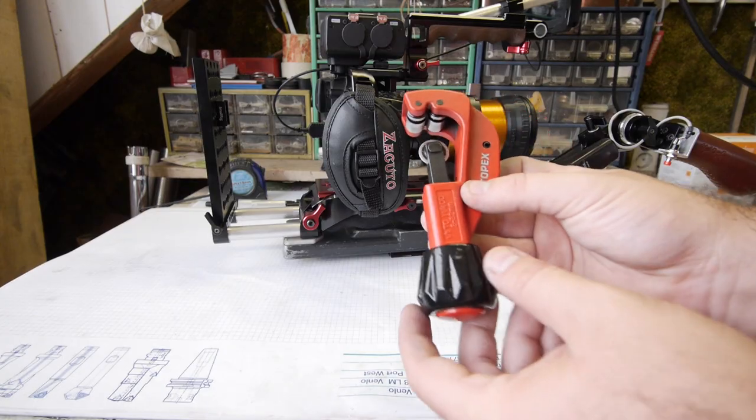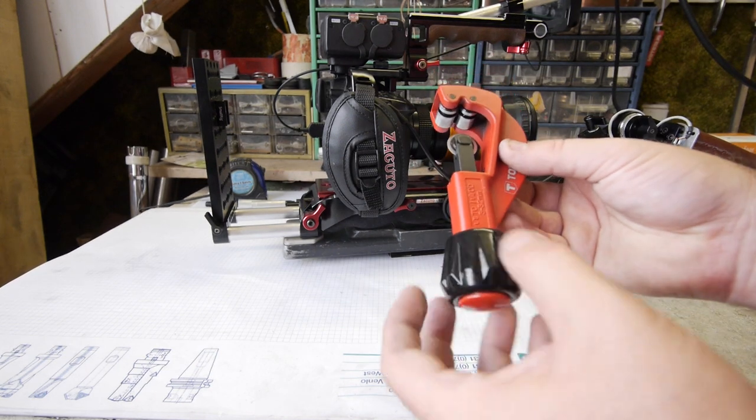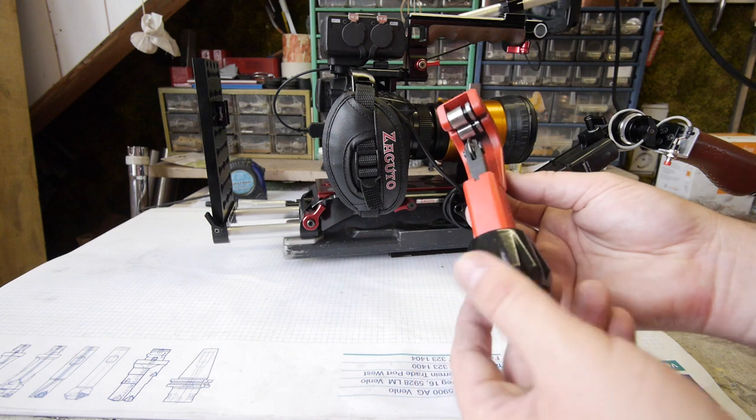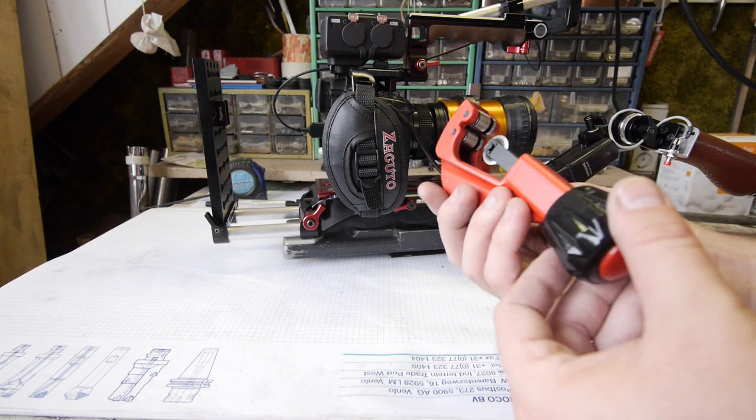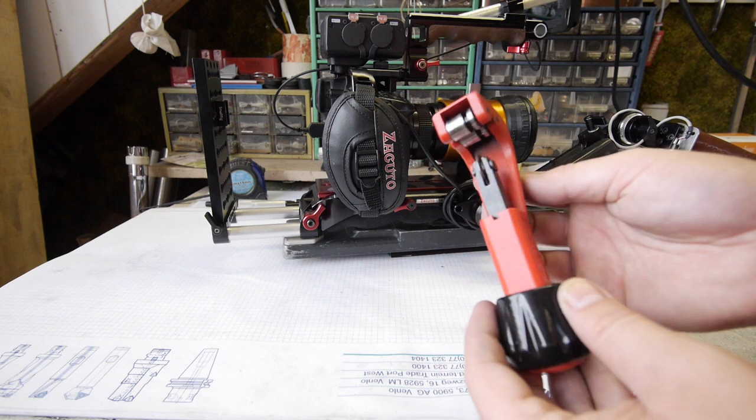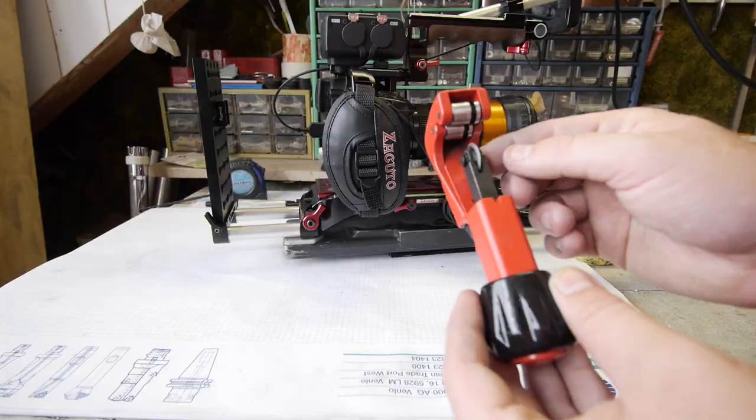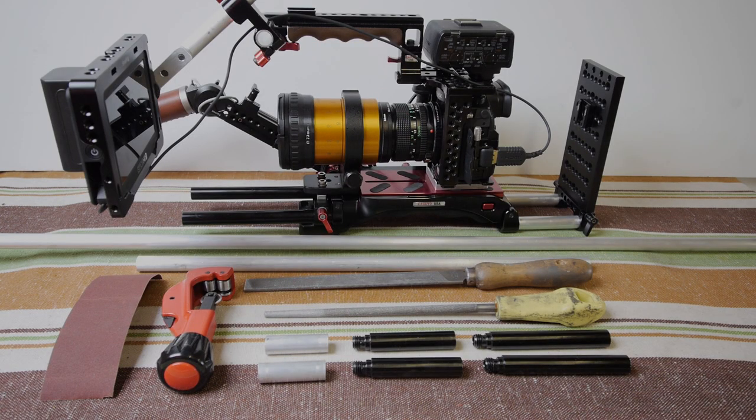So this is the tool I used, and this is a pipe cutter. And they are like 10-15 euros or dollars, and they are pretty good to cut aluminum. Aluminum is a very soft metal so you won't break your knife here. So this is how you make affordable aluminum 15mm rods for your shoulder rig.